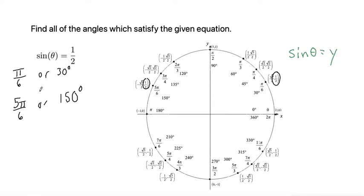So what this tells us is that all of the angles that satisfy this equation, at least on the unit circle, which is from 0 to 2 pi radians or from 0 to 360 degrees, that these are our solutions.